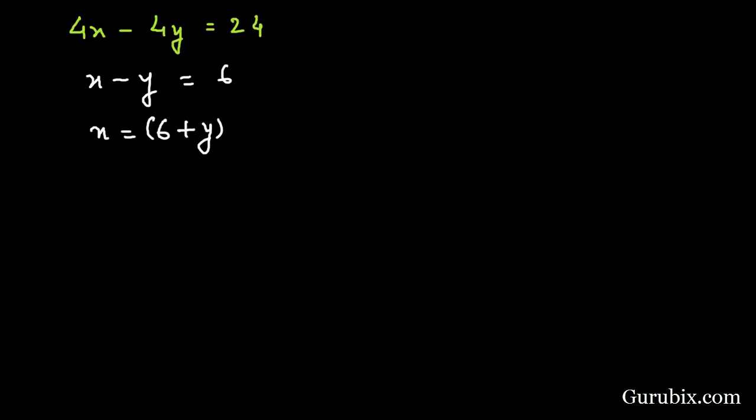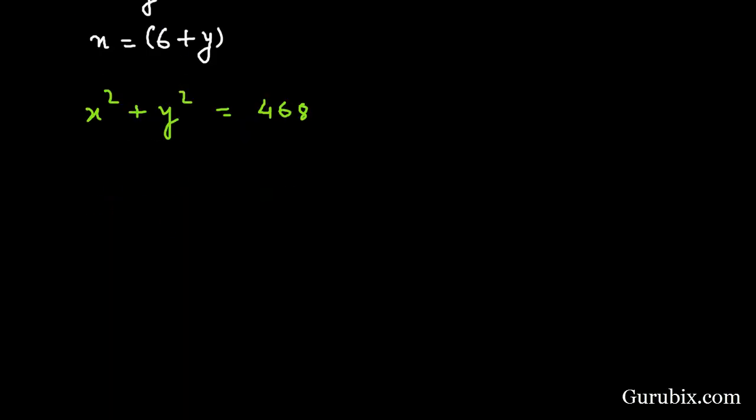We are also given that the sum of the squares is equal to 468 square meters. Here we shall put x square, and we shall apply the value of x here, that is 6 plus y squared. We have y square here, we have 468.